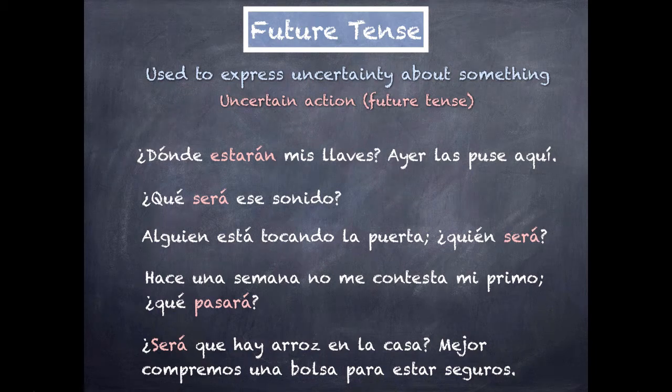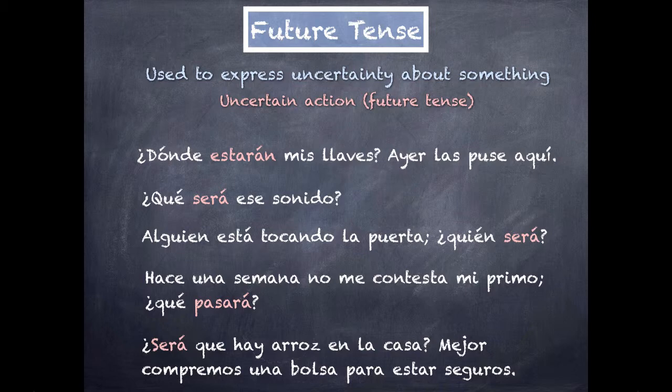Now we're going to learn about the future tense and using it to express uncertainty about something. This doesn't really correspond to the English 'will' in any way — it's very specific to Spanish. This is also one use of the future tense where you could not swap out IR plus a plus the infinitive. So this is one instance where you'll actually find the future tense used even in conversation, because there's no other way to express this uncertainty in the same way.